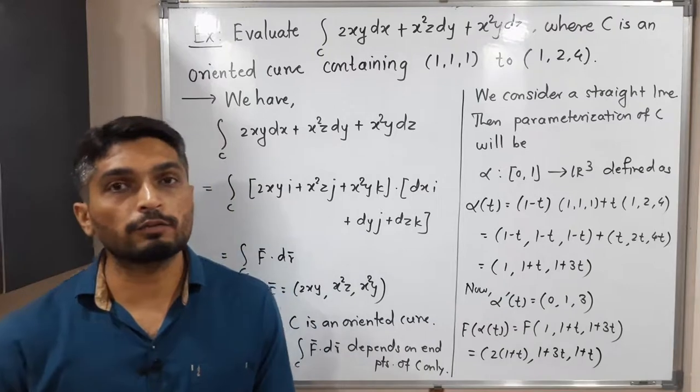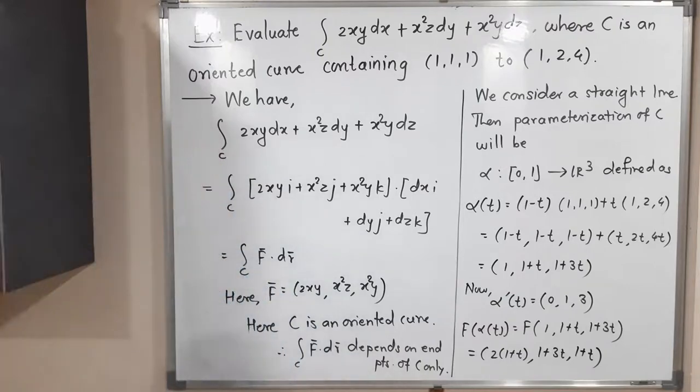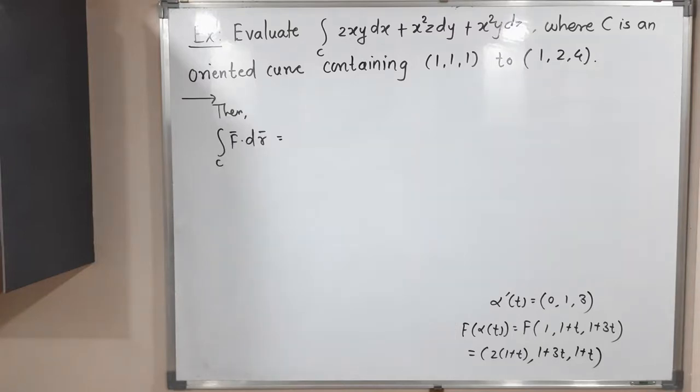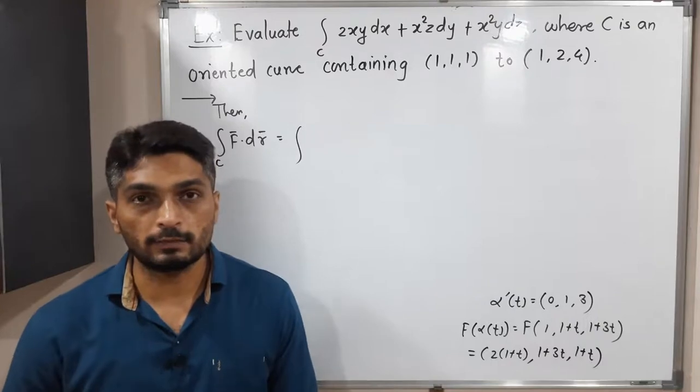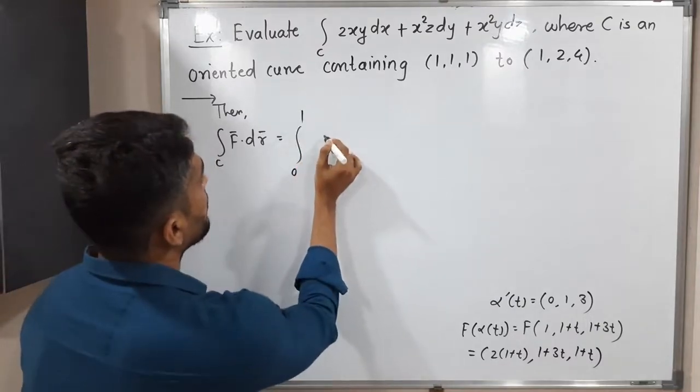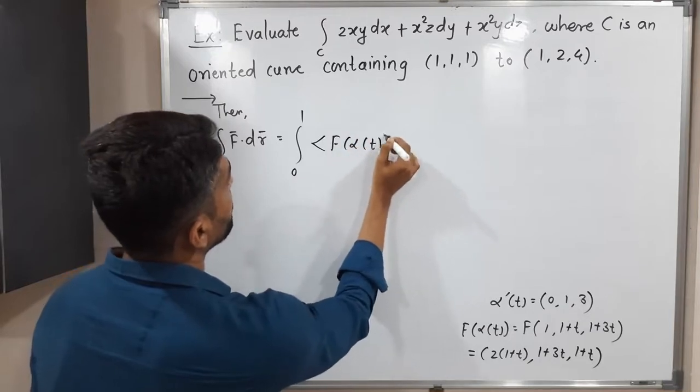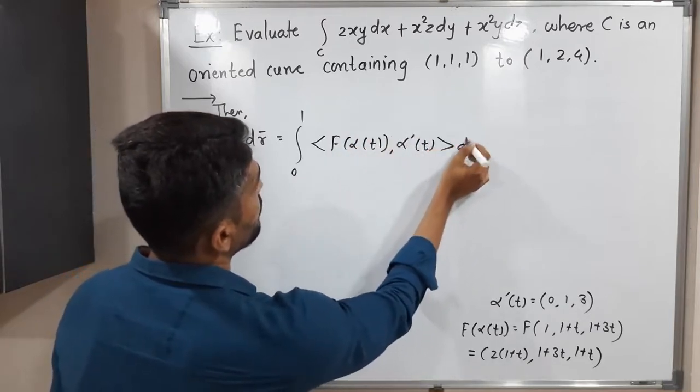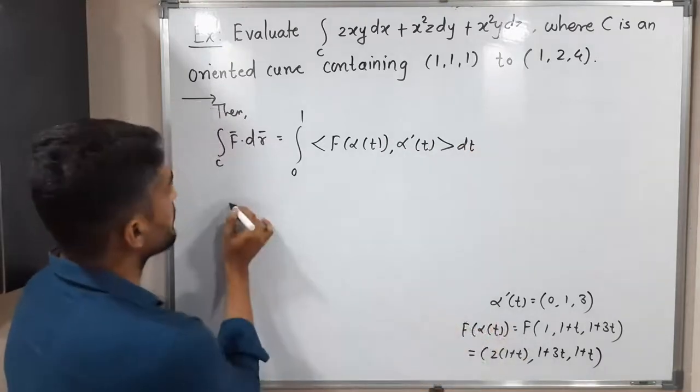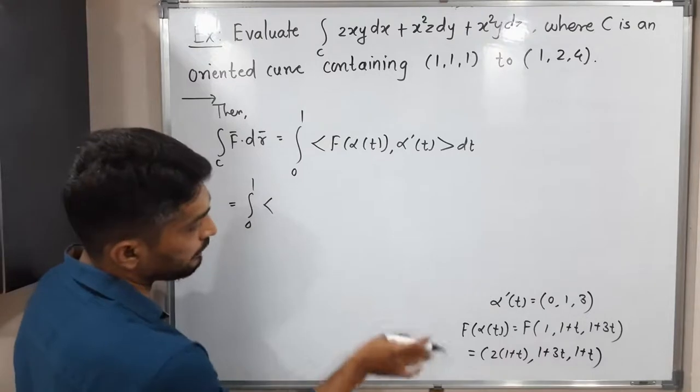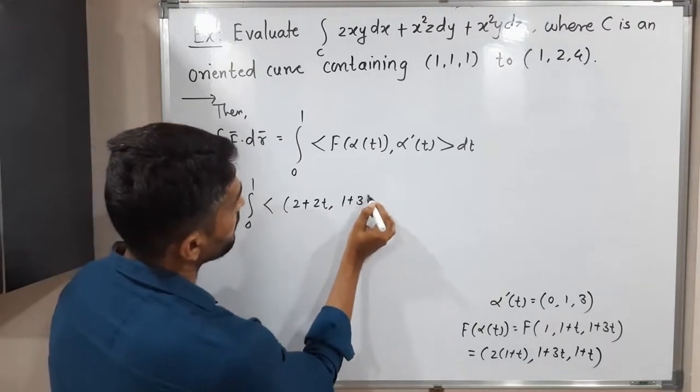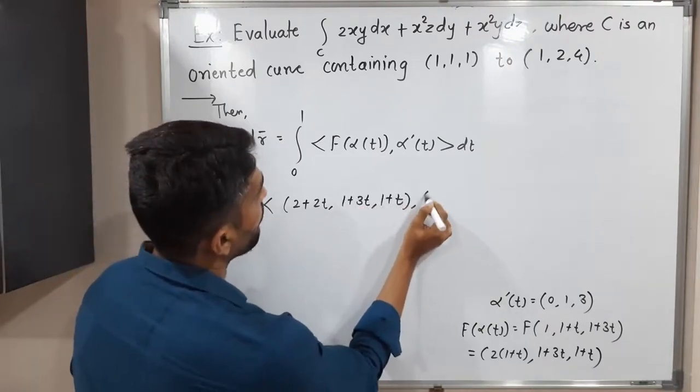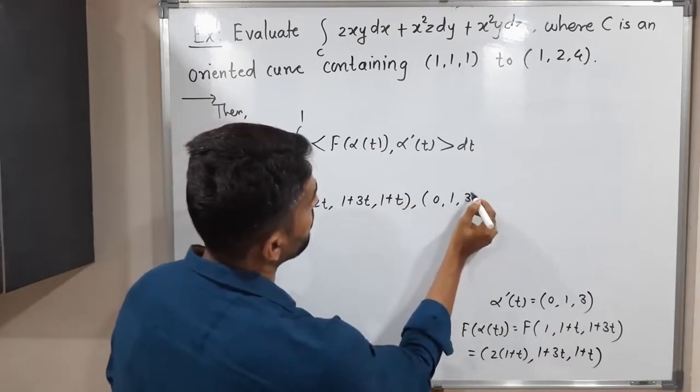So let us apply the definition of line integral of vector field to find its value. But there is no more space to write. Make a screenshot of it. Then we will go further. So then integration over C, F bar dot dr bar is equal to integration—so that C has parameterization alpha, which is defined on closed interval [0,1]. So limits of integral will be 0 to 1. So inner product of F of alpha of t, alpha dash of t. So let us put these values. Purposely I kept those values here. So integration 0 to 1, inner product of F of alpha of t we have got. Let me solve this bracket: 2+2t, 1+3t, and the last one is 1+t, alpha dash of t is (0,1,3) dt.